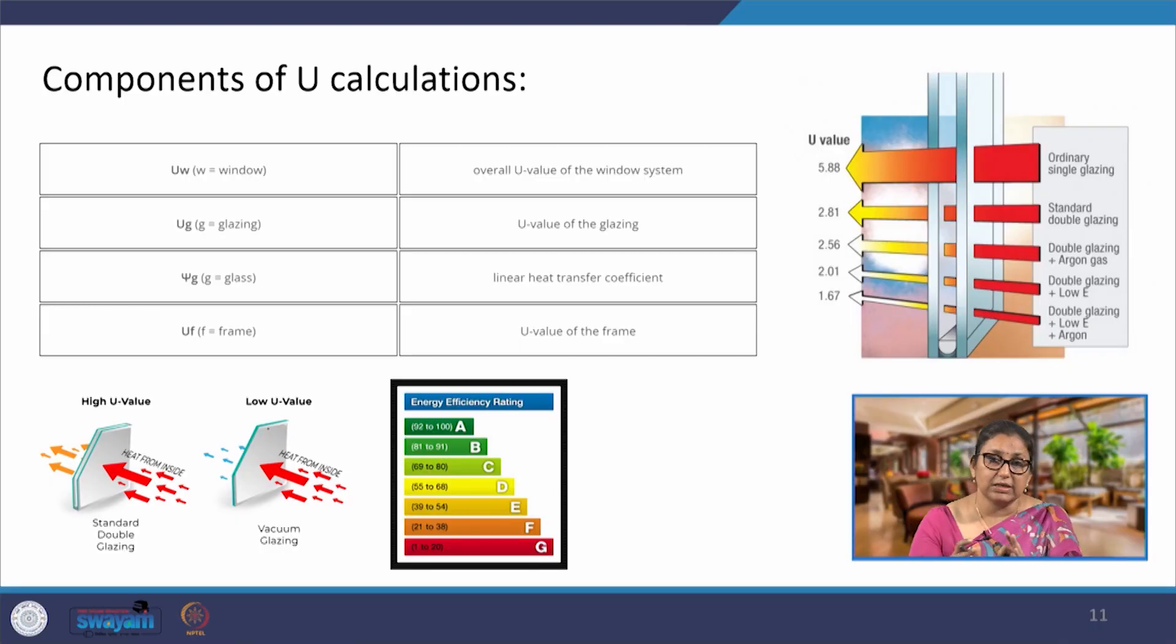Within window design there are many aspects that can be considered, for example window wall ratio - how much window area should be provided, or the orientation where windows should be provided. All of these details will impact the energy consumption of the building.